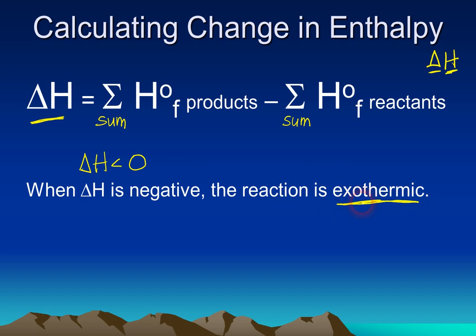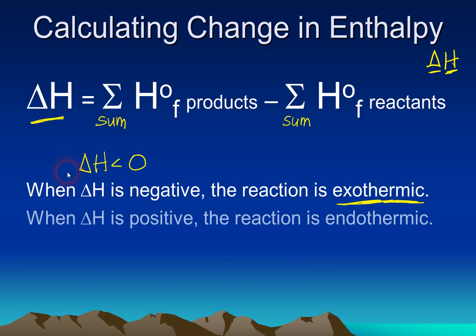And you might remember from our discussion a few days ago that exothermic means that it gives off heat, or if you put your hand next to it, it feels hot. The other possibility is that delta H is positive, so delta H could be greater than zero or positive. And if that's the case, the reaction is endothermic.